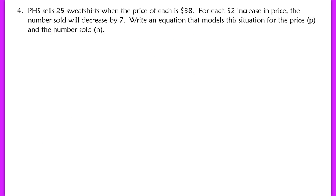Our last example is a model problem. Prospect sells 25 sweatshirts when the price of each is $38. For each $2 increase in price, the number sold will decrease by 7. Write an equation modeling this situation for price P and number sold N. First, define your variables. Price is the independent variable, because the price dictates how many sweatshirts are sold — increase the price and you sell fewer, decrease it and you sell more.